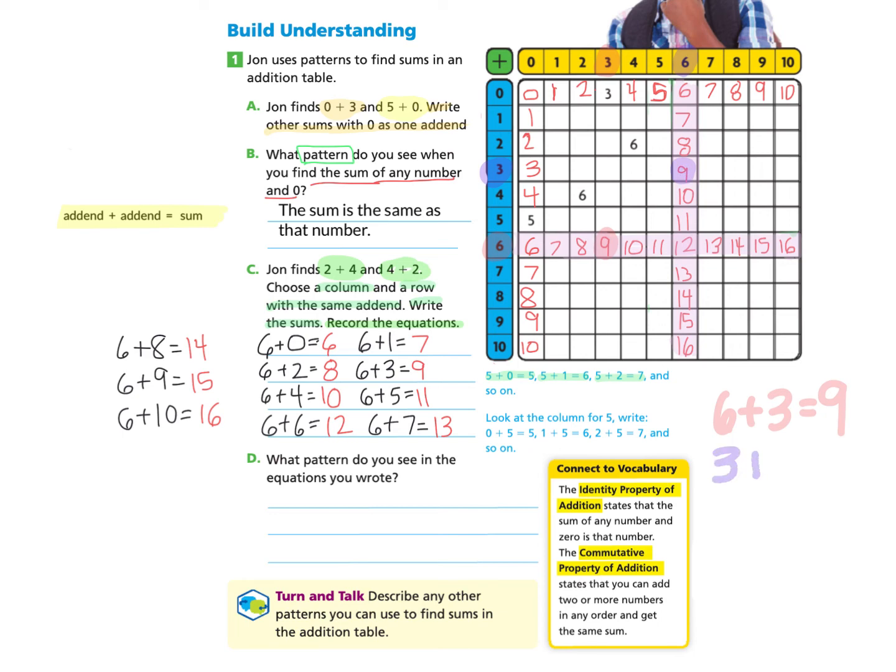So 3 plus 6 is also 9. And I'm noticing that on any of these addends that I can change the order of my addends, and I will still have the same sum.